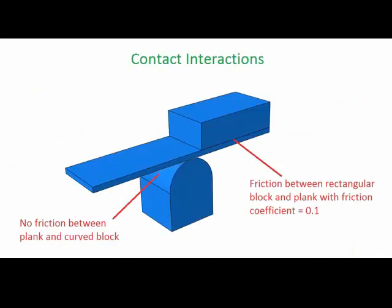We will have contact in two regions. The first is between the plank and the curved block. We will make this interaction frictionless. The second is between the rectangular block and the plank. Here we will specify a friction coefficient of 0.1, and we'll tell Abacus it is isotropic, meaning that the friction coefficient is the same in all directions.